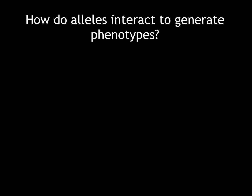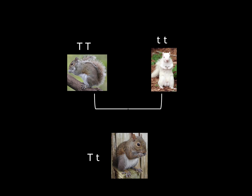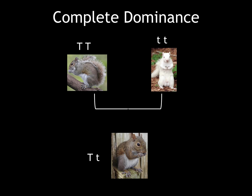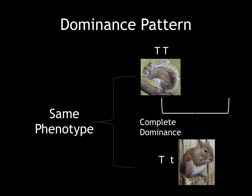You can follow along with these examples in your lab manual. This example represents complete dominance. We have two different alleles: the big T codes for gray fur color and the lowercase t codes for white fur color. These letters are arbitrary, simply chosen because the uppercase T is significantly different from the lowercase t. In this dominance pattern — complete dominance — we see the same phenotype between the dominant parent and the offspring.